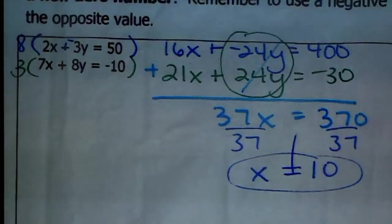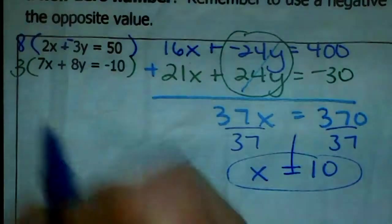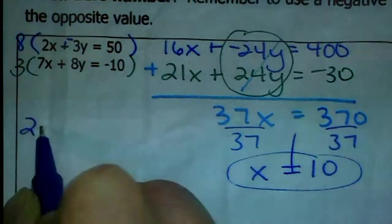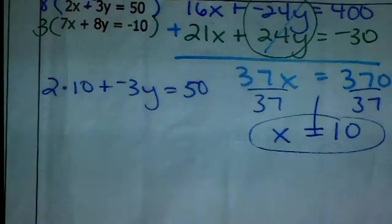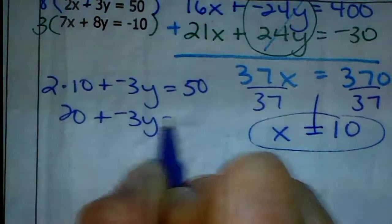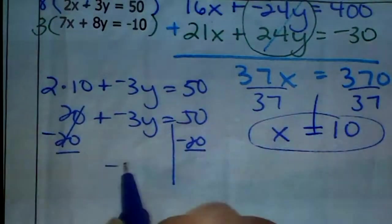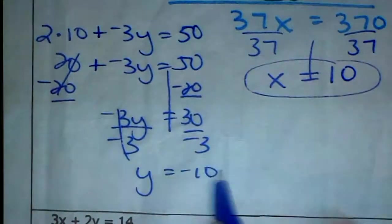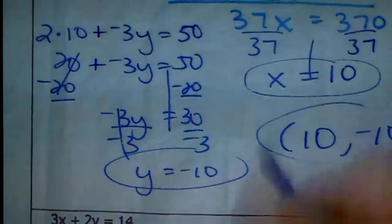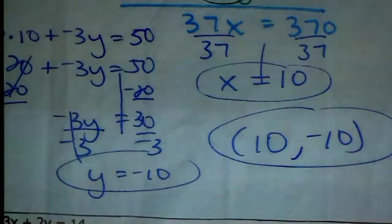Knowing X equals 10, I'll plug it into the first original equation: 2 times 10 plus negative 3Y equals 50, or 20 plus negative 3Y equals 50. Subtract 20 to get negative 3Y equals 30. Divide by negative 3 and Y equals negative 10. So X is 10 and Y is negative 10. Plug 10 and negative 10 into both original equations to verify.